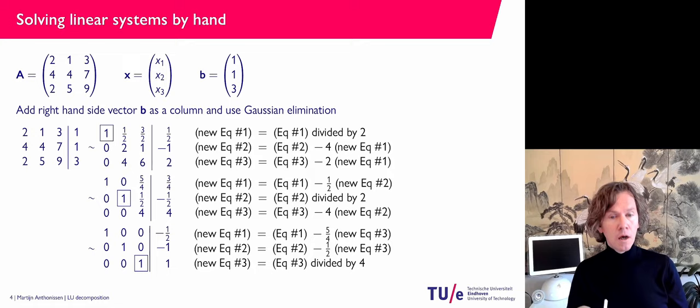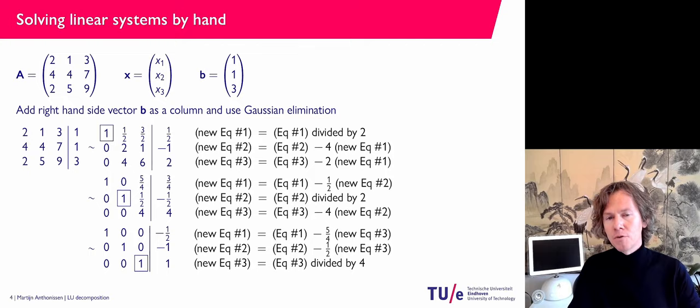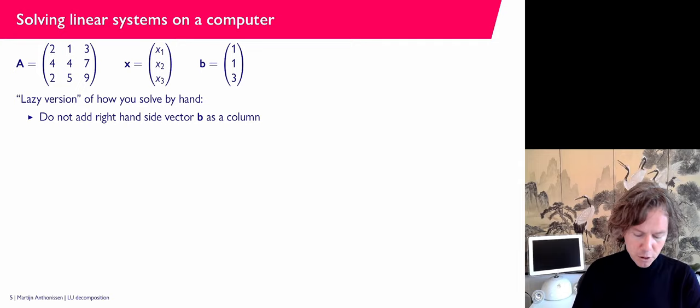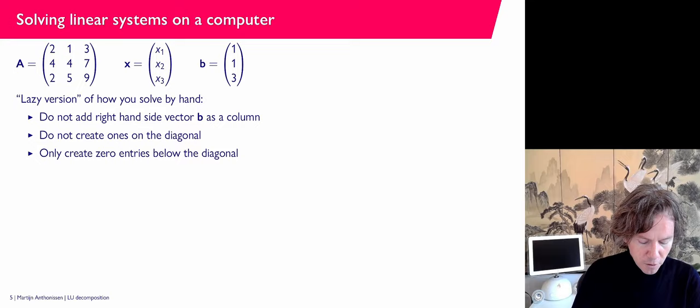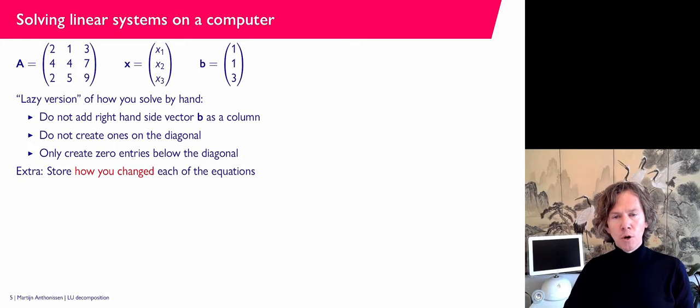That's what you would do by hand. Now a computer does it a little differently. It does not consider the right-hand side vector b — it just works with the matrix. It does not create ones on the diagonal, so it doesn't divide by the diagonal entries. It only creates zeros below the diagonal, not above. As an extra step, it does some bookkeeping, storing how the equations were changed. So we start with the matrix A only.